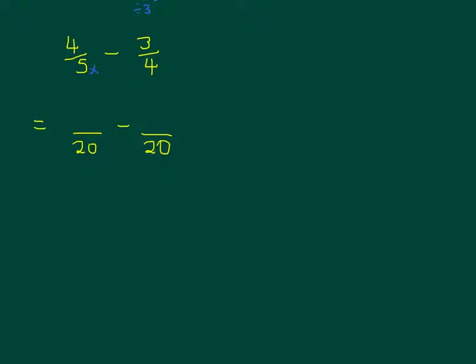The 5 has been times by 4 to get to 20, so I need to times the numerator by 4: 4 times 4 is 16. So 4 over 5 is exactly the same as 16 over 20 — they are equivalent fractions. The 4 has been times by 5 to get to 20, so I times the numerator by 5: 3 times 5 is 15. Now my denominators are the same. I can subtract them keeping the denominator the same: 16 minus 15 is 1. I check — can I simplify 1 over 20? No, so 1 over 20 is the correct answer.